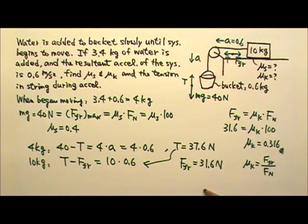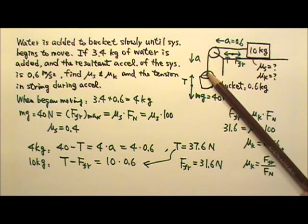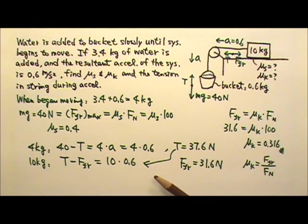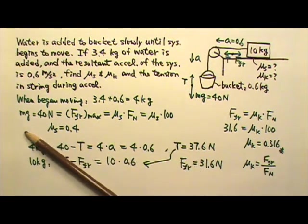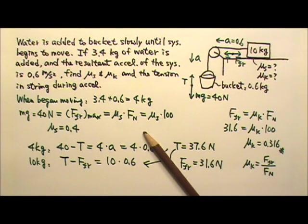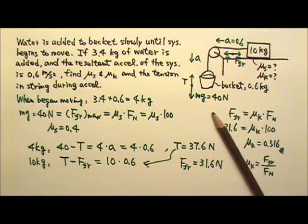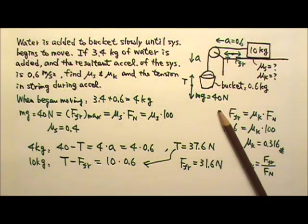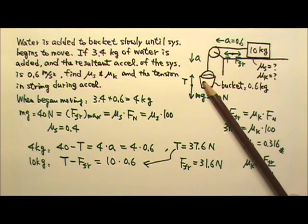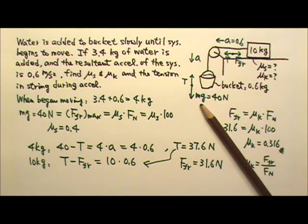Before we end, I would like to bring one thing to your attention. It is sometimes easy for us to forget that the tension in a string does not always equal to the weight that's hung under. For example, in this problem, before the system begins to slide, it has a 0 acceleration. When we look at the force diagram for this bucket and water, we can see that when the acceleration is 0, the tension equals the mg, 40 newtons.